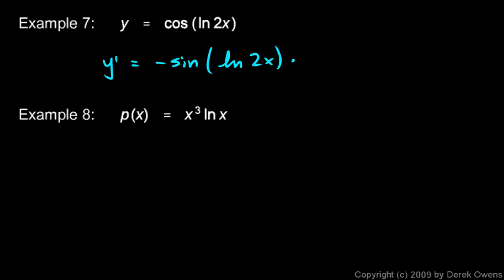The derivative of ln of 2x is 1 over 2x times 2, also by the chain rule. There are multiple links in this chain.